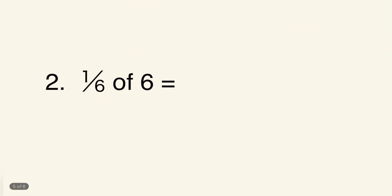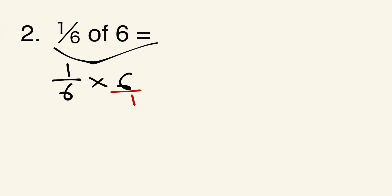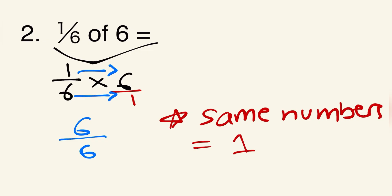The next example is one sixth of six. Since 'of' equals multiplication, this means one sixth times six. We put the whole number over one and multiply across, which gives us six over six. Whenever the numerator and the denominator are the same number, the fraction equals one. So this equals one.